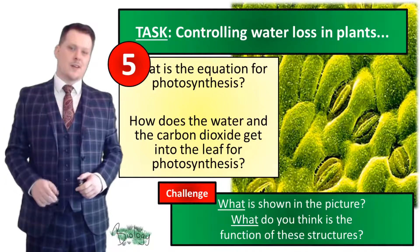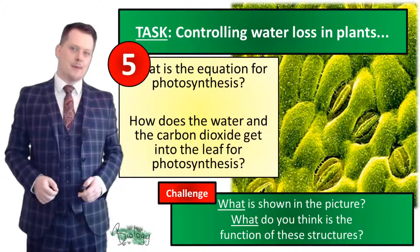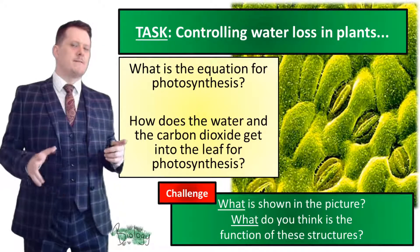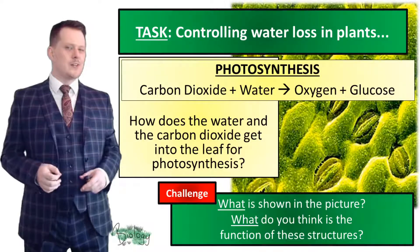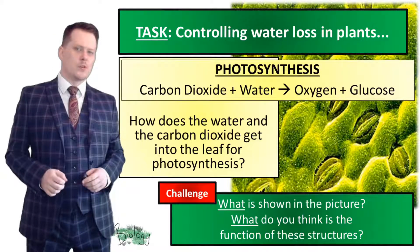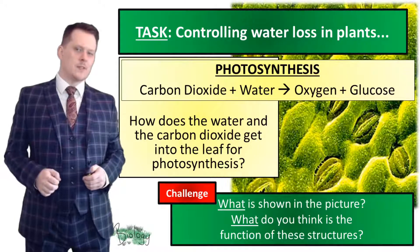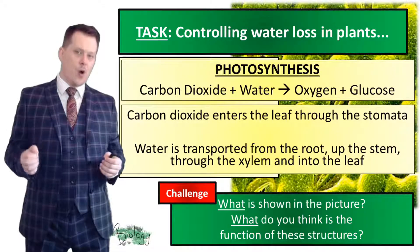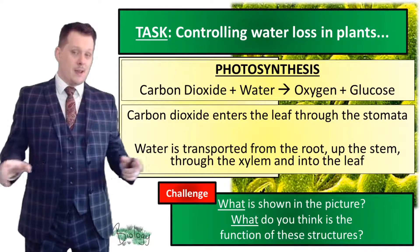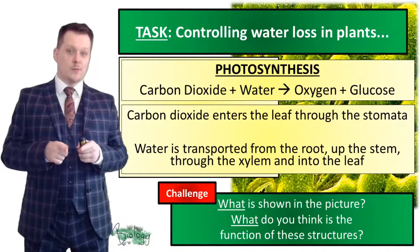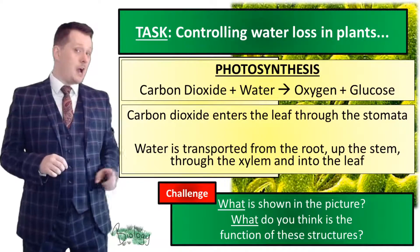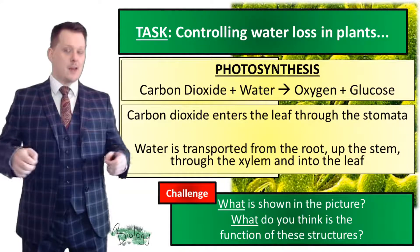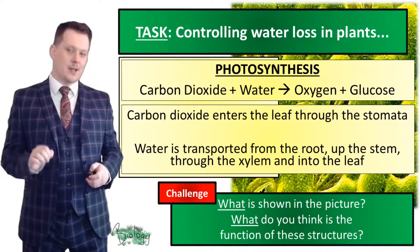Photosynthesis is carbon dioxide plus water gives us oxygen and glucose. Carbon dioxide is present in the atmosphere and enters the leaf through the stomata — the holes in the bottom of the leaf. Water is absorbed by the roots and then transported up the stem through the xylem into the leaf. The picture shown is actually the underside of a leaf, showing the stomata, which let carbon dioxide into the leaf and let oxygen and water out of the leaf.